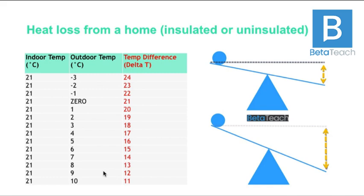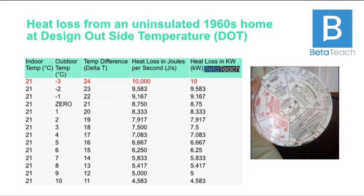A lot of people think the condensing boiler was invented to capture more heat going up the flue — that's not why it was invented. Engineers used to do heat loss calculations, but that practice declined partly because the industry favoured just putting boilers on the wall. The combi boiler came along, which is essentially a centralised instantaneous hot water heater needing a lot of power so hot taps run hot. Heat loss calculations started to fall out of use — but now with heat pumps, we need to be sizing the home properly again.